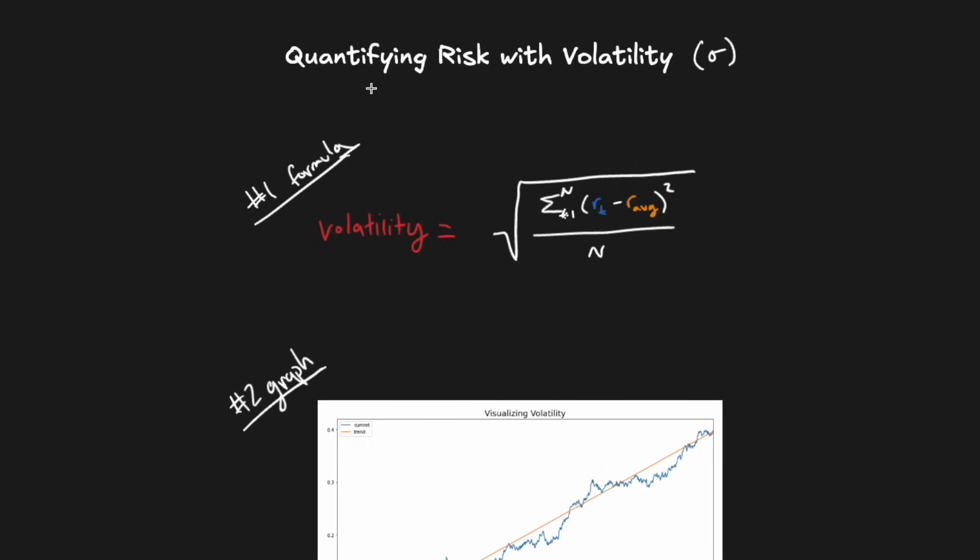The first thing we have to do to derive this new metric is to quantify risk. Our risk metric should capture this intuition that if the returns graph wiggles a lot like black, there's a lot more uncertainty, pain, or luck involved, and therefore it's a riskier investment. One of the simplest and most common ways of doing this is by calculating the standard deviation of returns, also known as volatility, denoted by sigma. The formula for volatility is given here.